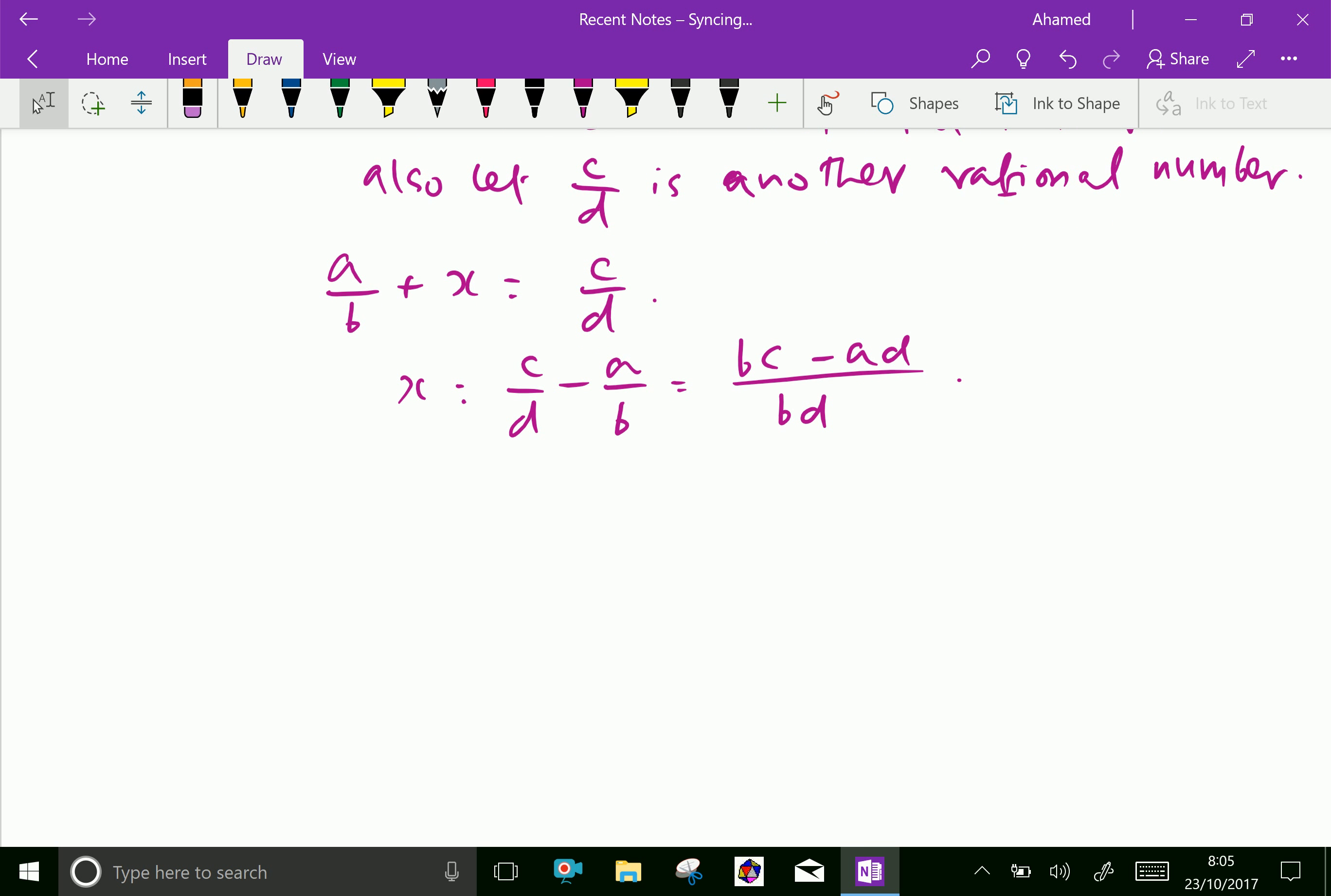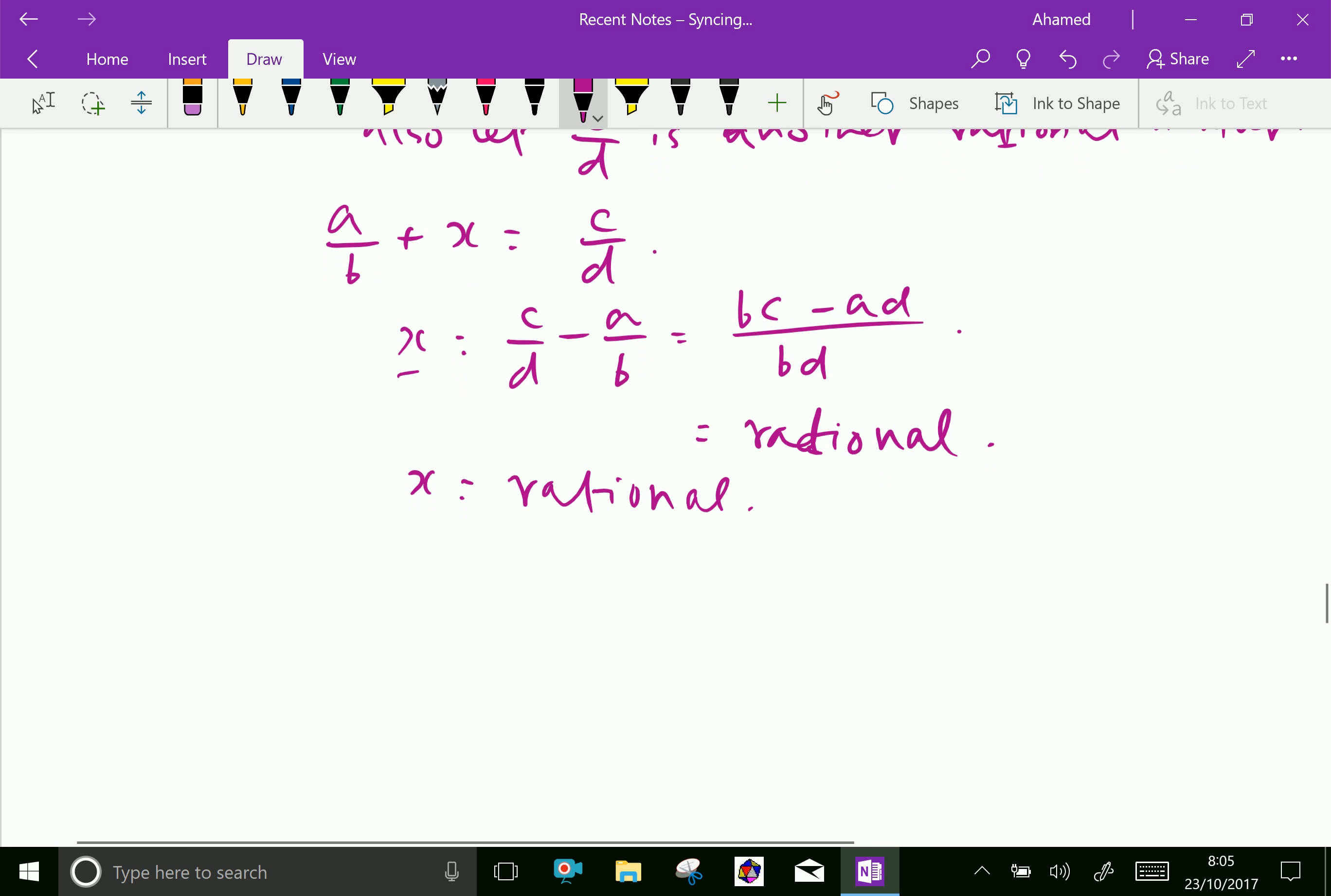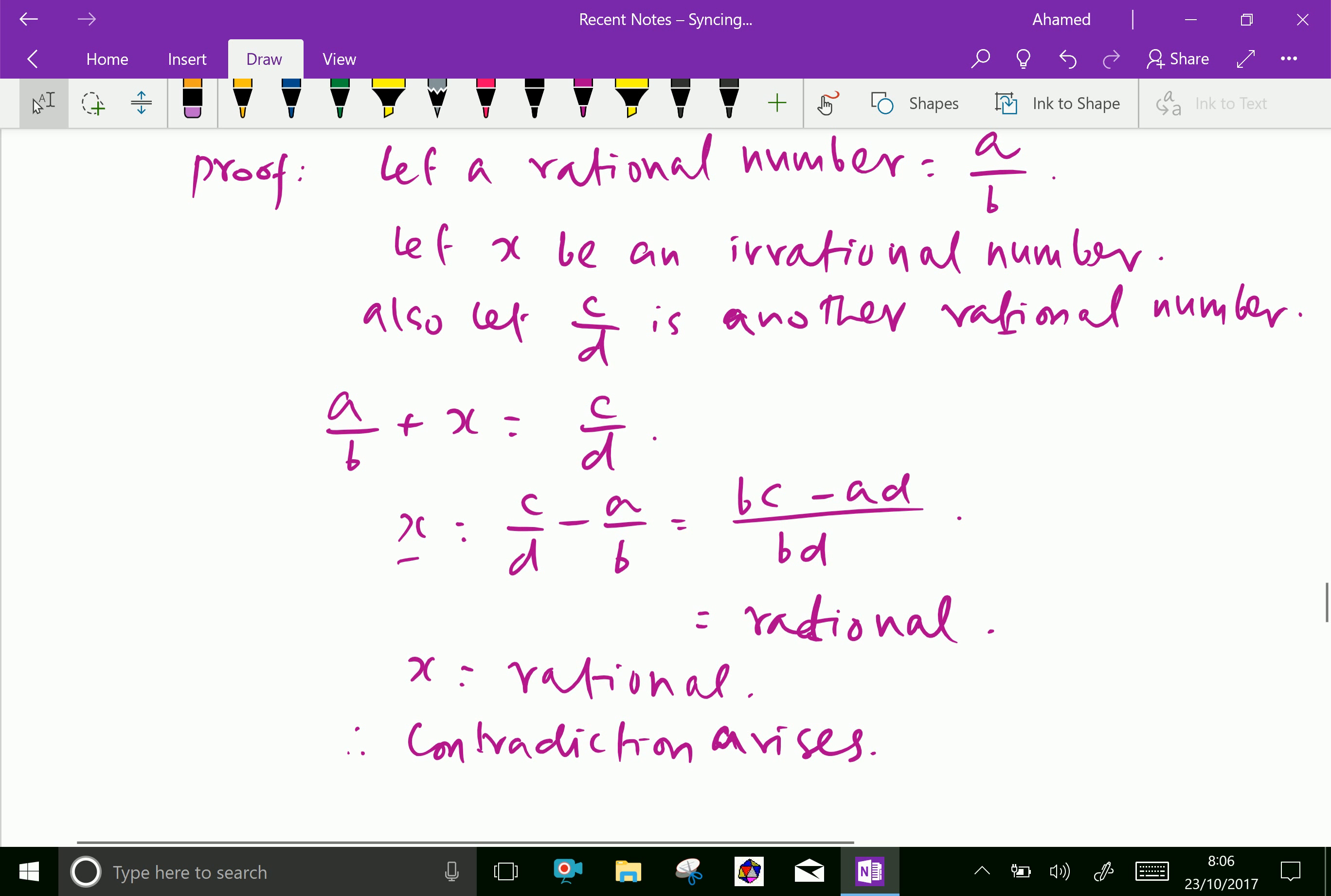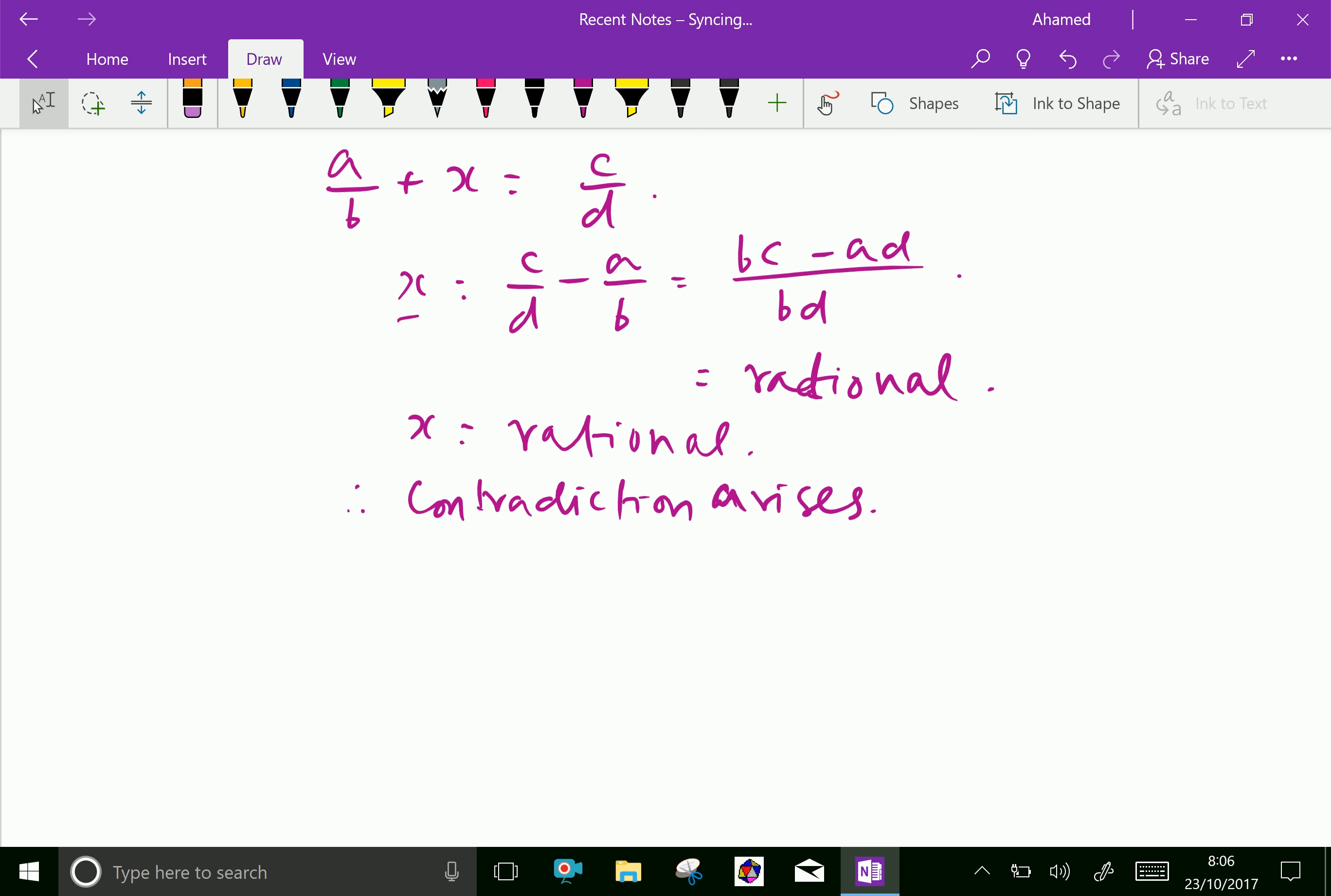Look here, we let x be irrational, but x is expressed as (bc - ad)/bd, which is also rational. We got x is rational, but contradiction arises. We already let x be irrational, but we got x is rational. Therefore, contradiction arises, so our supposition is wrong.